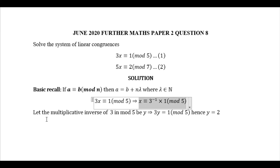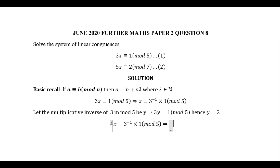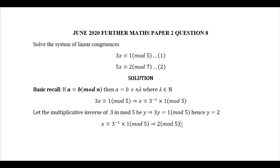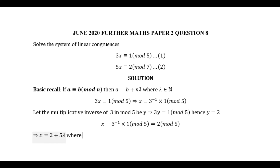Since y equals 2, we replace the inverse of 3 mod 5 with 2. So we get 2 times 1, which is 2 mod 5. According to our standard linear form, x will be equal to 2 plus 5 times lambda, where lambda belongs to the set of natural numbers.